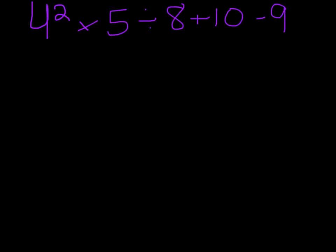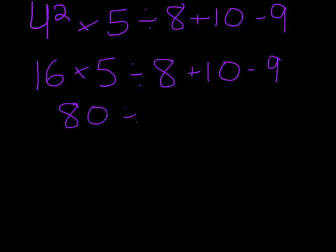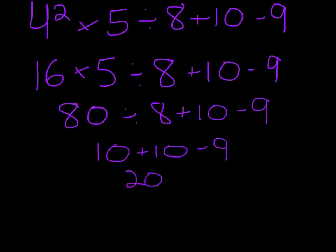Since there is no parentheses in this expression, you would solve the exponents first. 4 squared is 16 times 5 divided by 8 plus 10 minus 9. 16 times 5 is 80 divided by 8 plus 10 minus 9. 80 divided by 8 is 10 plus 10 minus 9. 10 plus 10 is 20, and then minus 9. So your final answer will be 11.